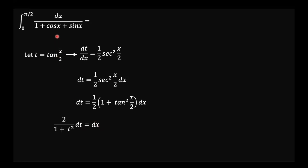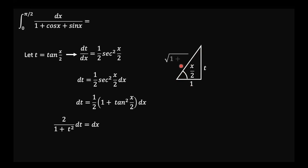We also want to re-express cosine x and sine x, and the limits, in the t domain. I draw a triangle with x/2 as the angle of focus. Since t equals tan(x/2), and tangent equals opposite over adjacent, we set the opposite side to t and the adjacent to 1. Therefore the hypotenuse is the square root of 1 plus t squared. This lets us express sine(x/2) and cosine(x/2) using these triangular relationships.